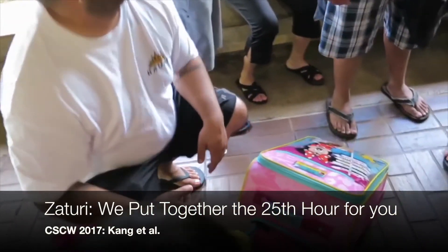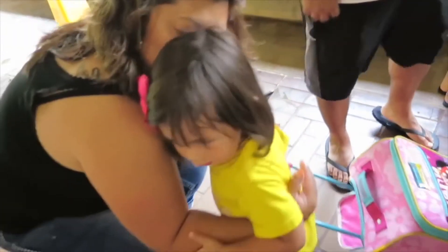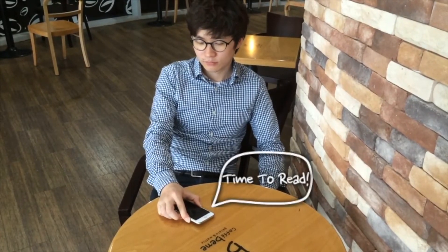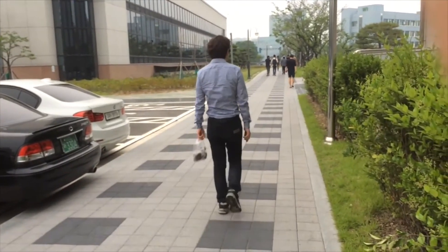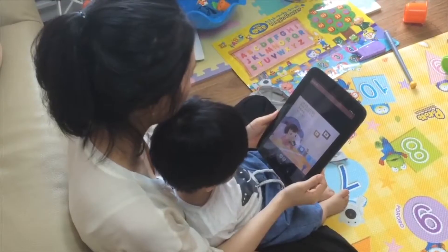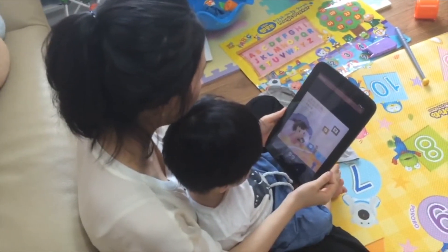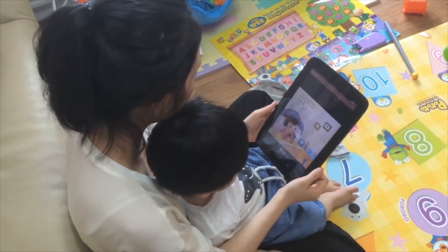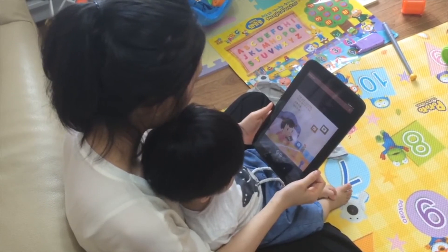It is not easy for working parents to communicate with their children and make their children feel attached to them. It is mostly due to lack of free time. With our application, Zaturi, they will be alarmed when micro-spare times are detected, and then they can record their readings of a book using a phone call-like interface.